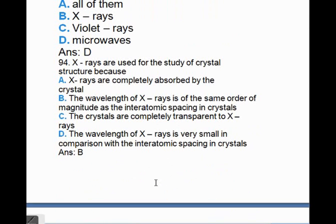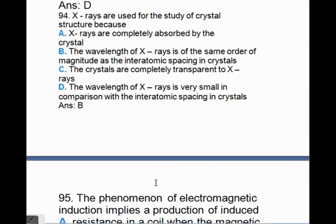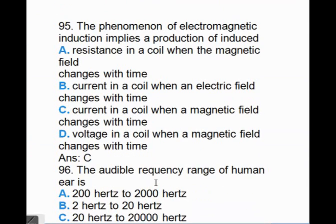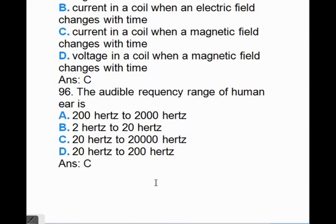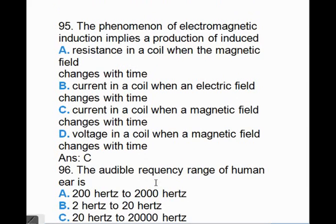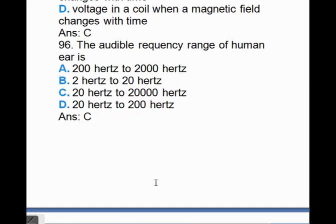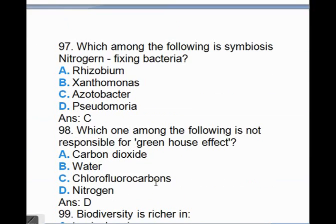X-rays are used for the study of crystal structure because, answer is B, the wavelength of X-rays is of the same order of magnitude as the interatomic spacing in crystals. The phenomenon of electromagnetic induction implies a production of induced, the answer is C, current in a coil when a magnetic field changes with time. The audible frequency range of human ear is 20 Hz to 20 kHz. Which among the following is symbiotic nitrogen-fixing bacteria? The answer is C, Rhizobium.